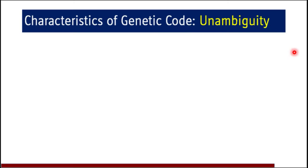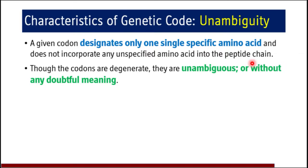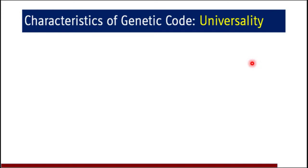Coming to the characteristics of genetic code, the first characteristic is unambiguity. A given codon designates only one single specific amino acid and does not incorporate any unspecified amino acid into the peptide chain. Although codons are degenerate, they are unambiguous — they do not have any doubtful meaning. If UUU is present, it is going to synthesize a specific amino acid only. One codon stands for only one amino acid — that is the property known as unambiguity.